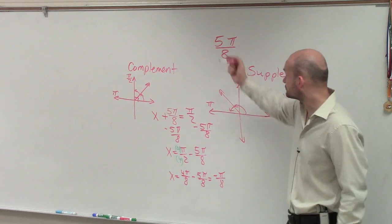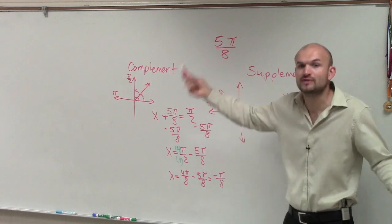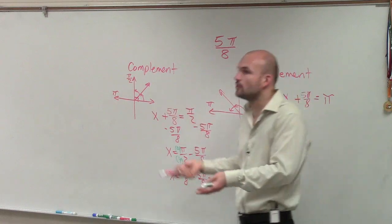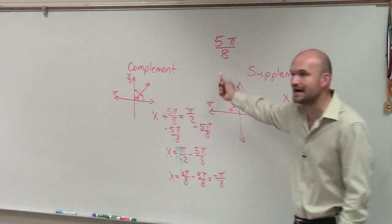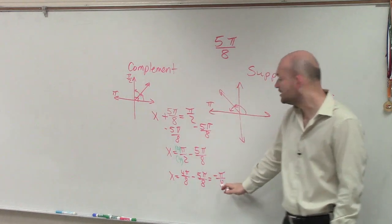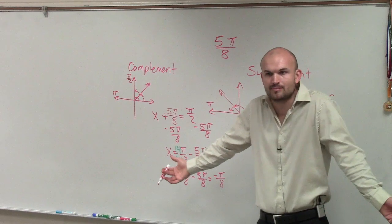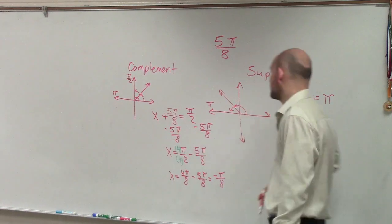Because 4π/8 would be π/2. So 5π/8 is over 90 degrees. So therefore, this angle does not have a complement. So if you try to find the complement and you get a negative angle, it does not have a complement, because it's already over π/2. It's already over 90 degrees.